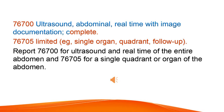Ultrasound, abdominal, real-time with image documentation, complete or limited — e.g., single organ, quadrant, or follow-up. Report 76700 for ultrasound in real-time of the entire abdomen and 76705 for a single quadrant or organ of the abdomen.